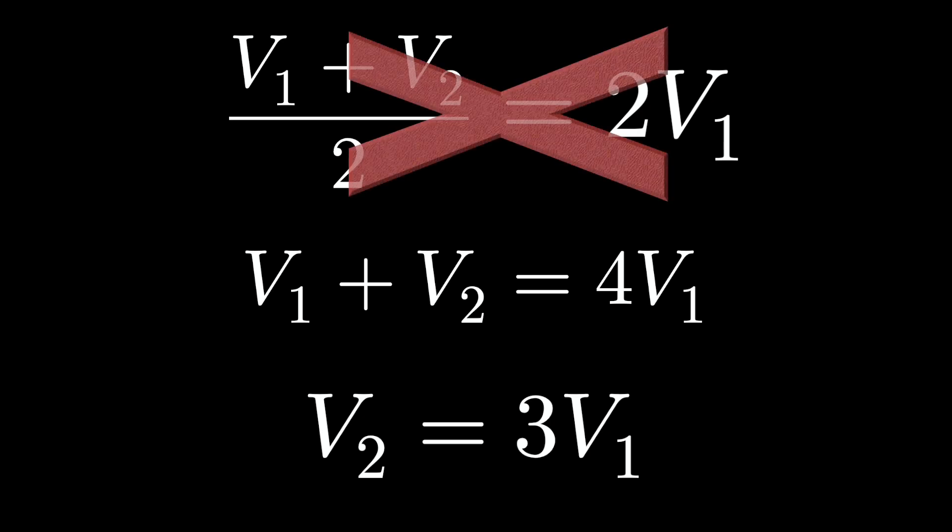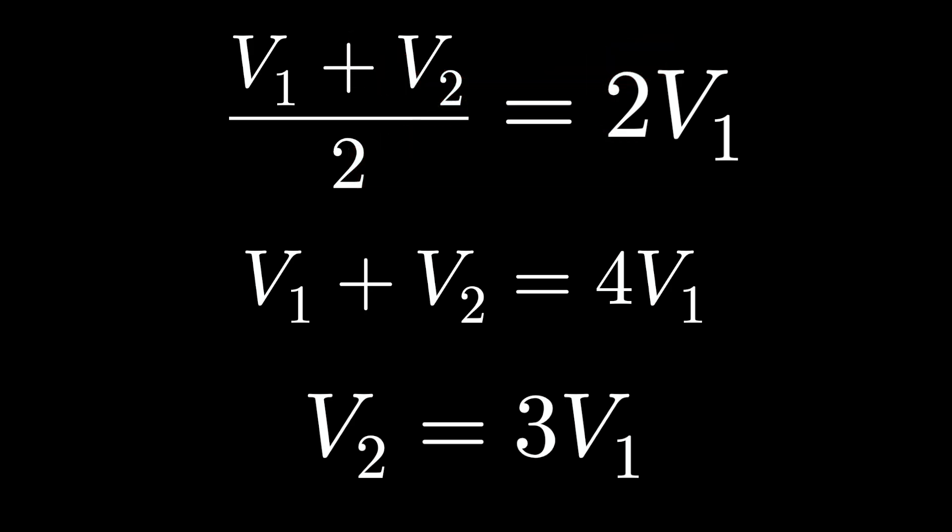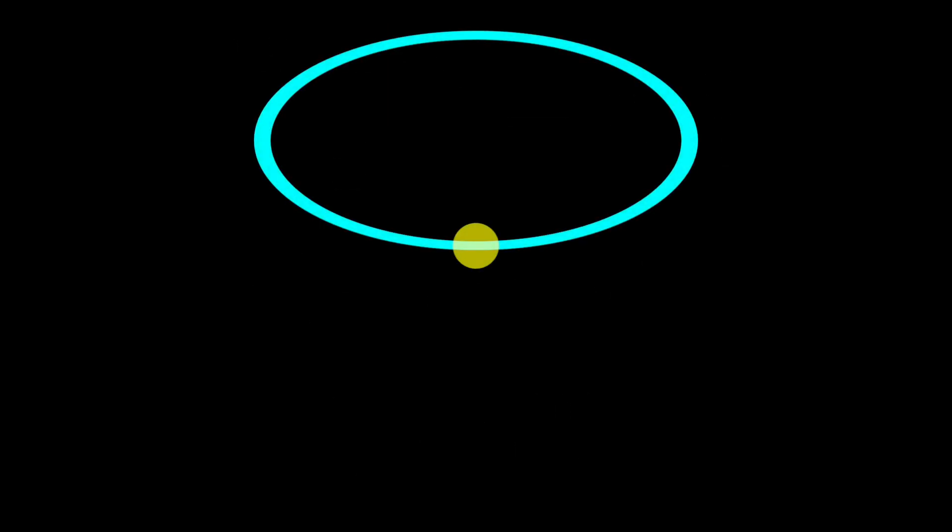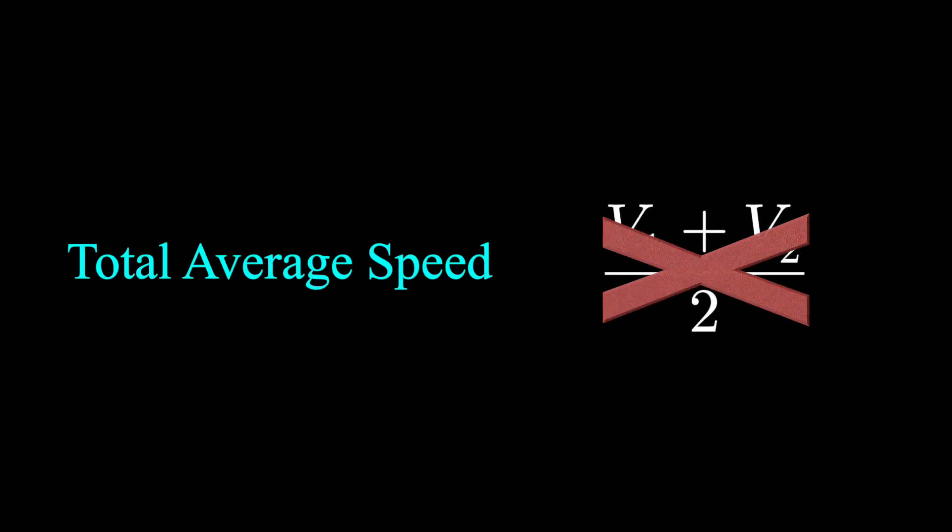Except this thinking is wrong. Performing the calculations this way assumes that the velocities, the speeds, are equally weighted. If we're computing our total average speed of two laps, and the second lap goes faster than the first, well, the second lap is going to take less time than the first. So our average speed isn't V1 plus V2 over two. It's the total distance of two laps divided by the total time for two laps.